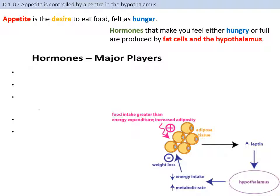Hunger is maintained by hormones involving multiple systems and organs working together. The hormones that help you feel hunger and feel full are produced by fat cells (adipose tissue) and the hypothalamus — a region of the brain that is the connecting point between the nervous system and the endocrine system. The nervous system sends information around the body for control, while the endocrine system sends hormones for broader regulation.